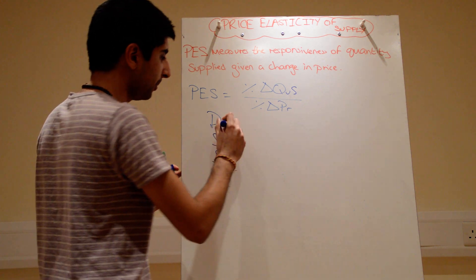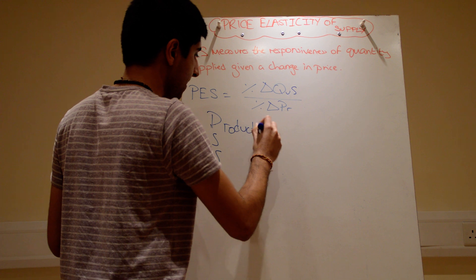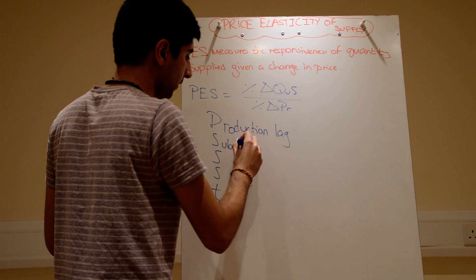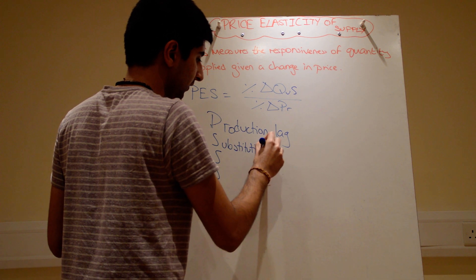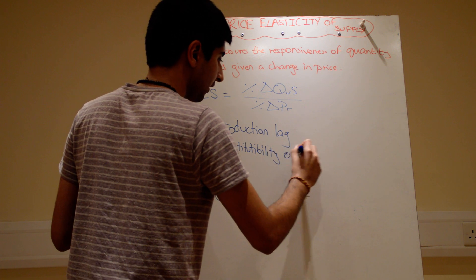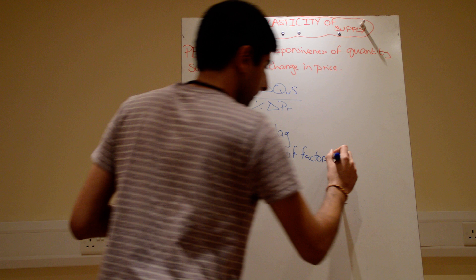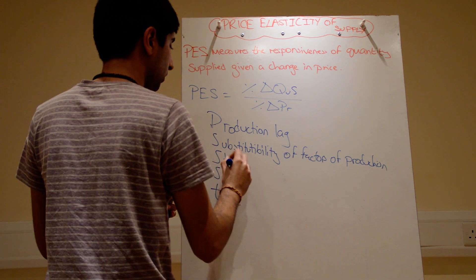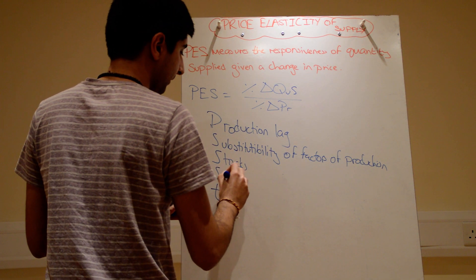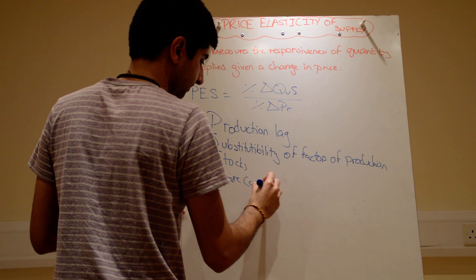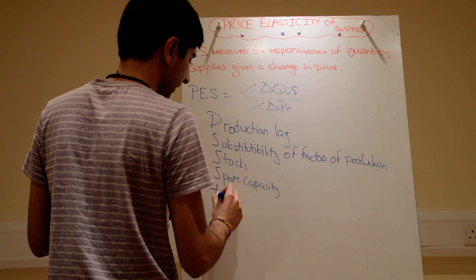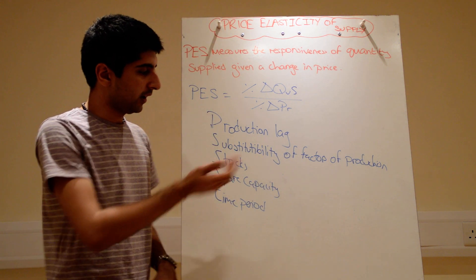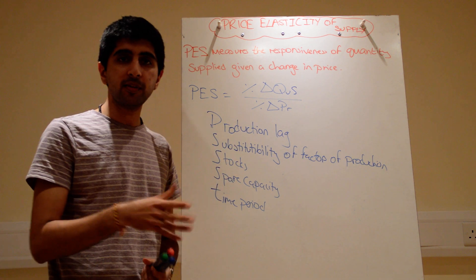So what does PSST stand for? P is production lag. The first S is substitutability — substitutability of factors of production. The next S is level of stocks. The final S is level of spare capacity. These are all very important. And again, you have the time period as well.